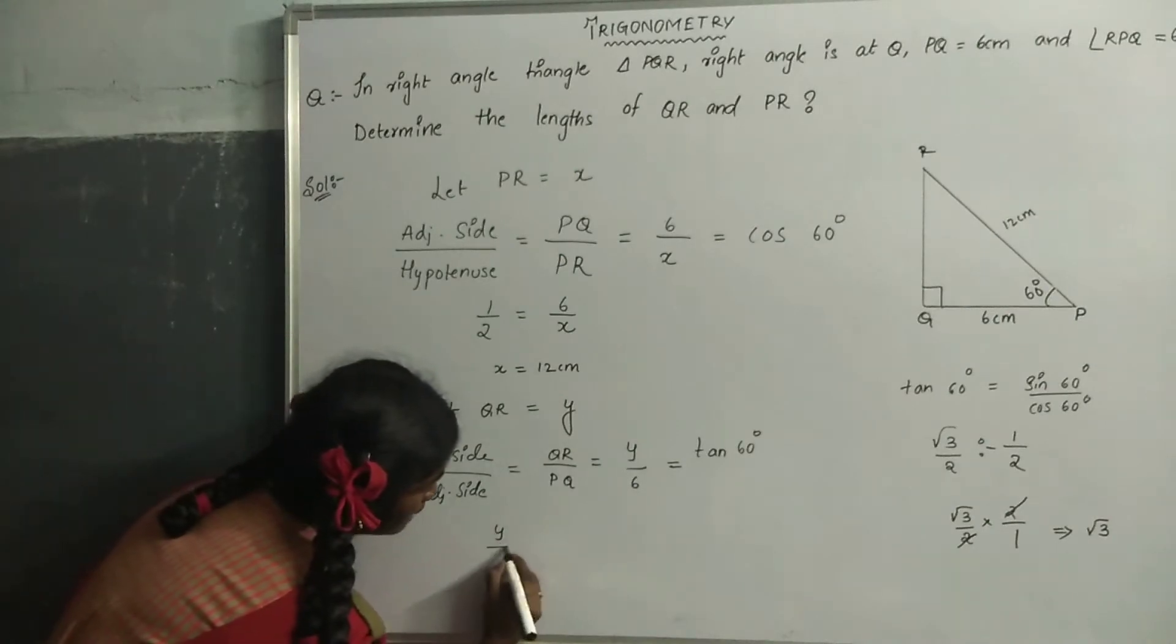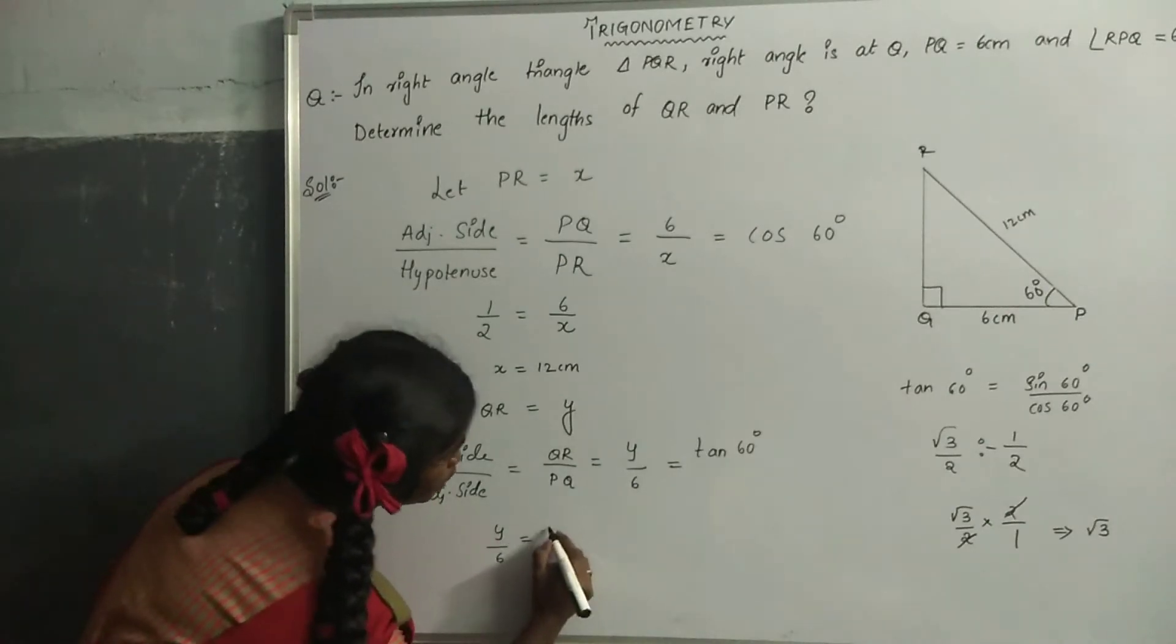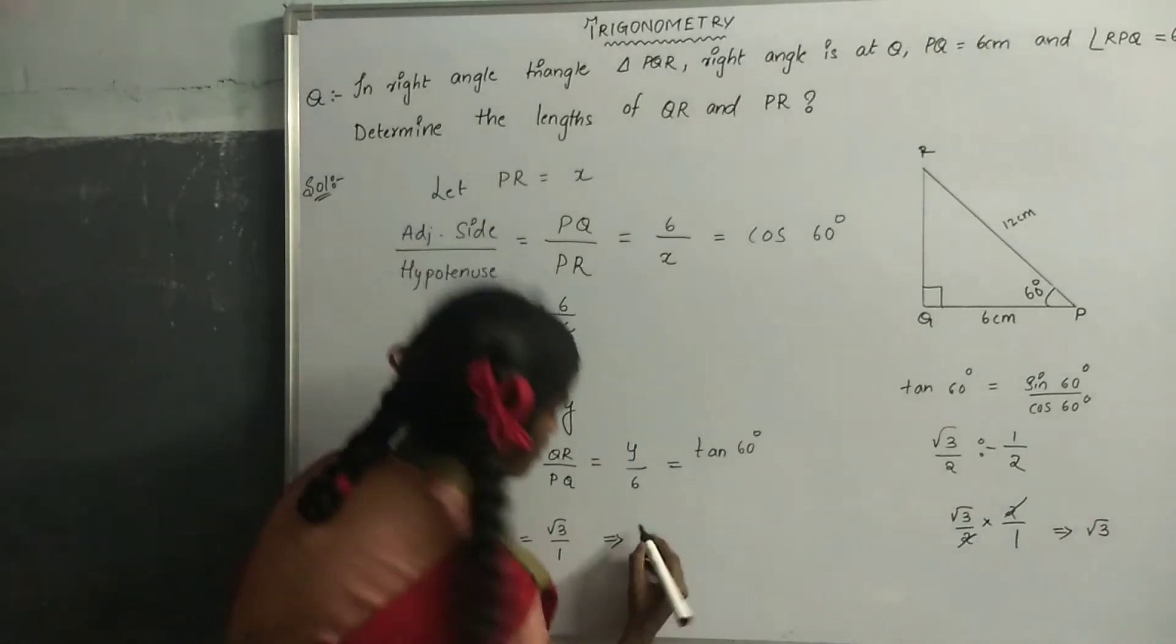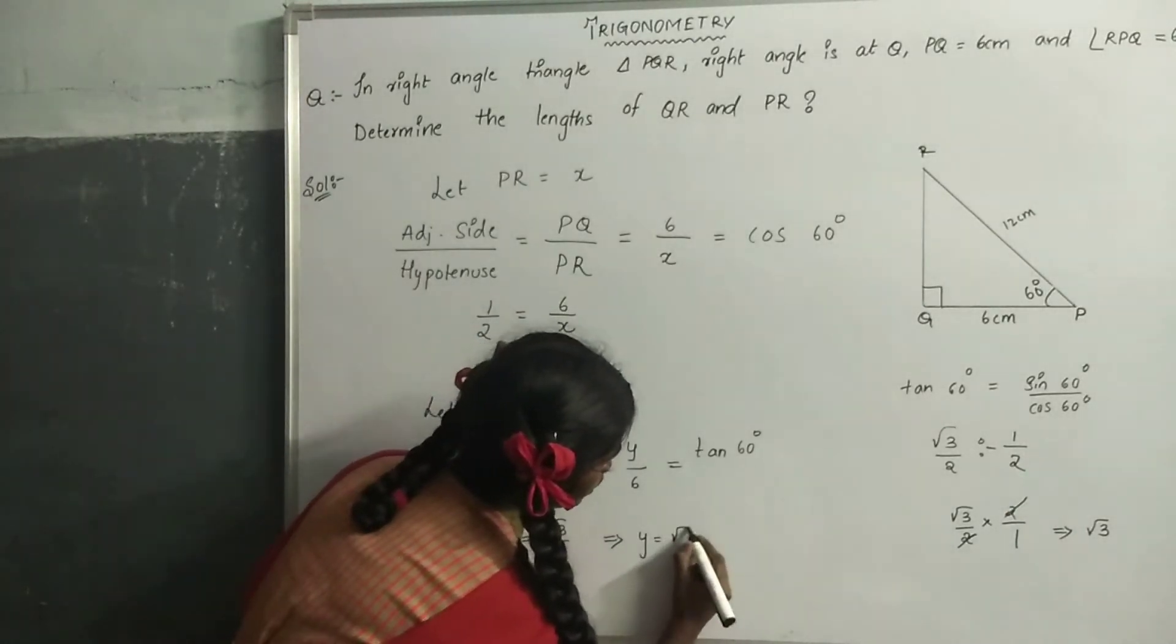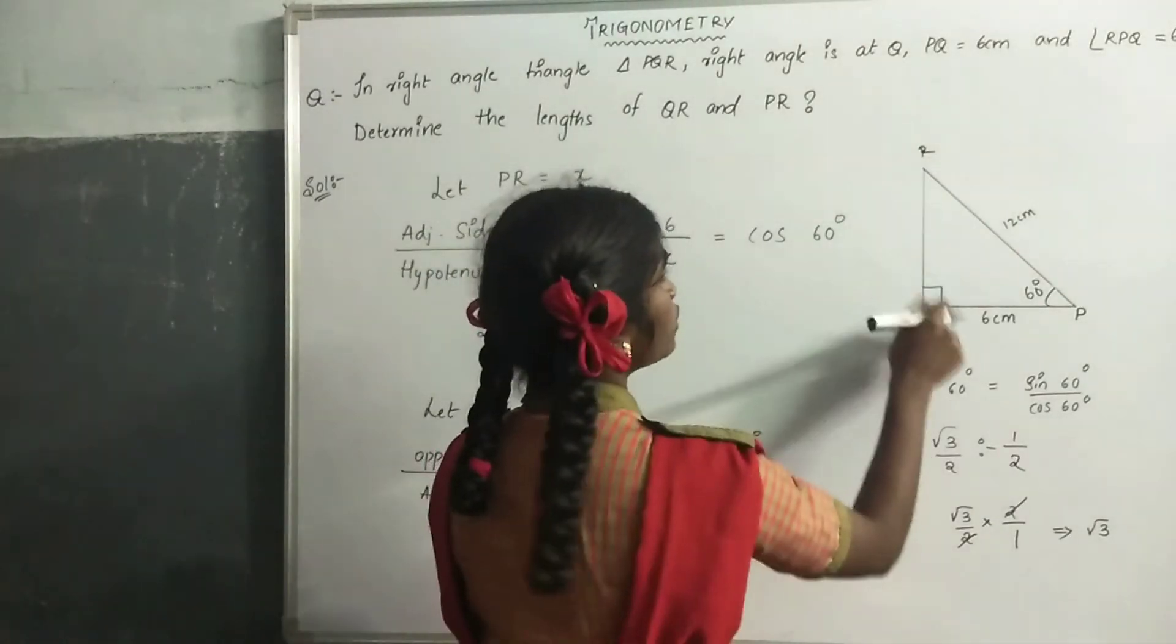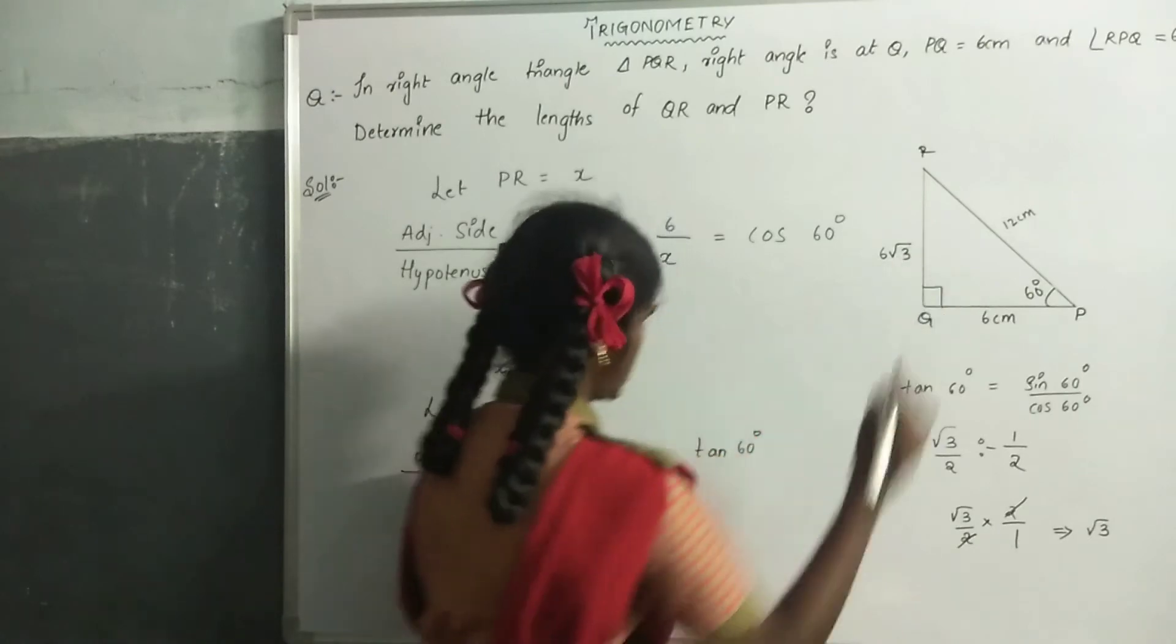Y by 6 equals root 3 by 1. Therefore, Y equals 6 root 3. So QR equals 6 root 3.